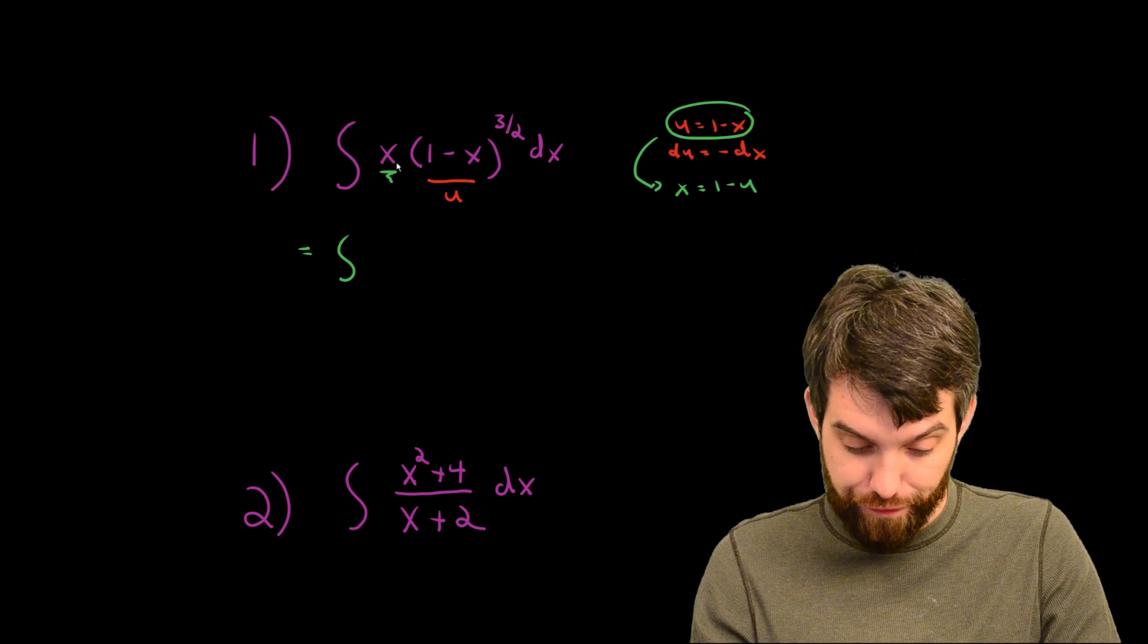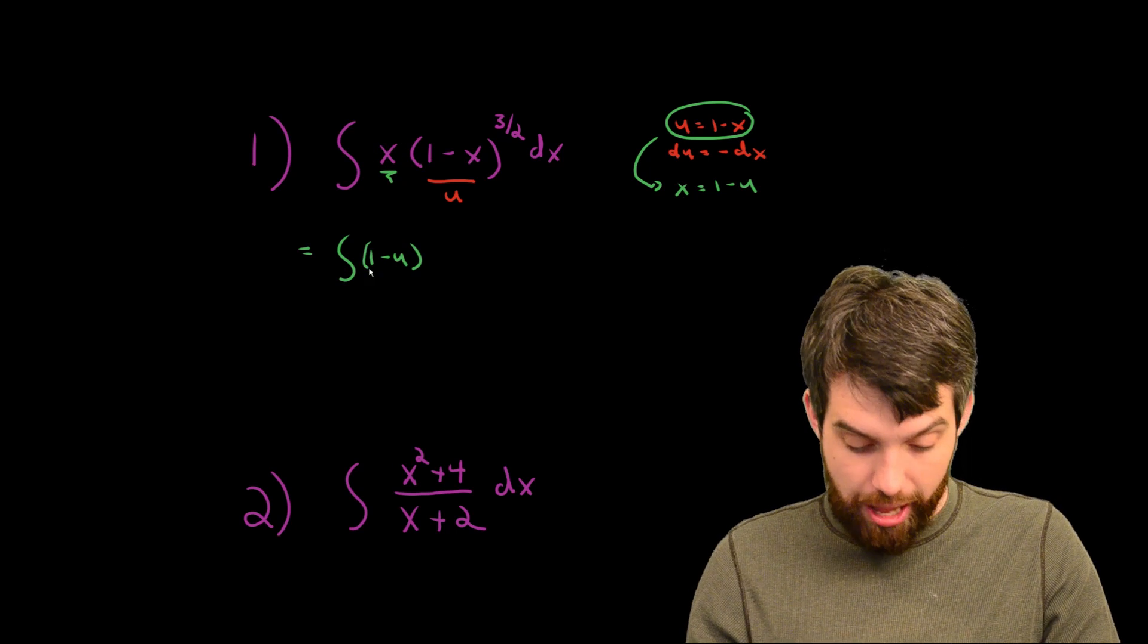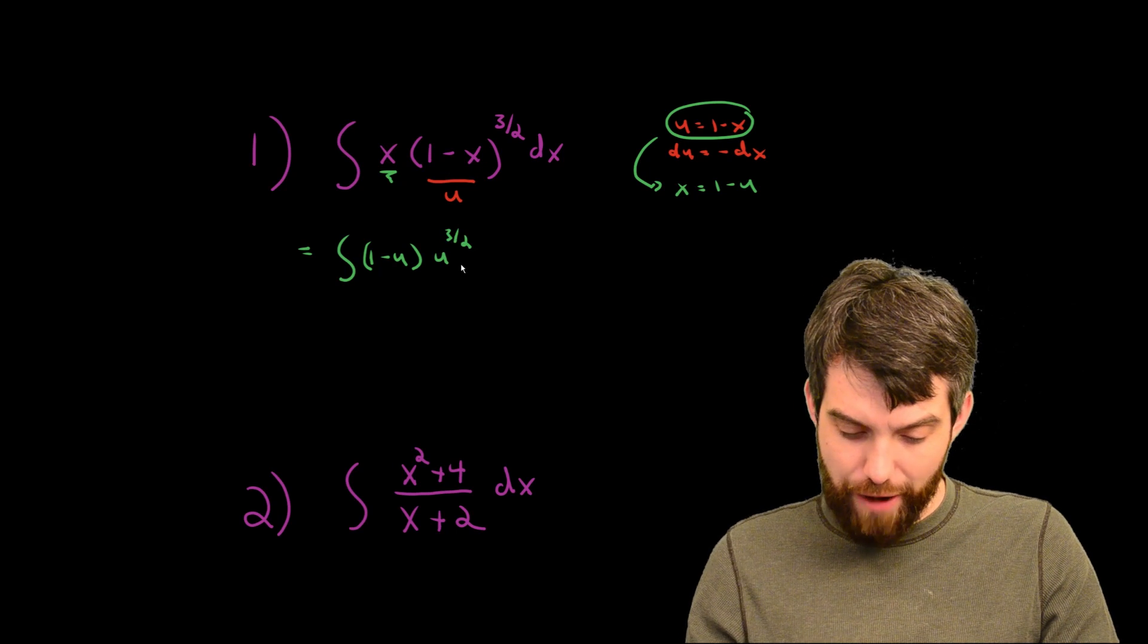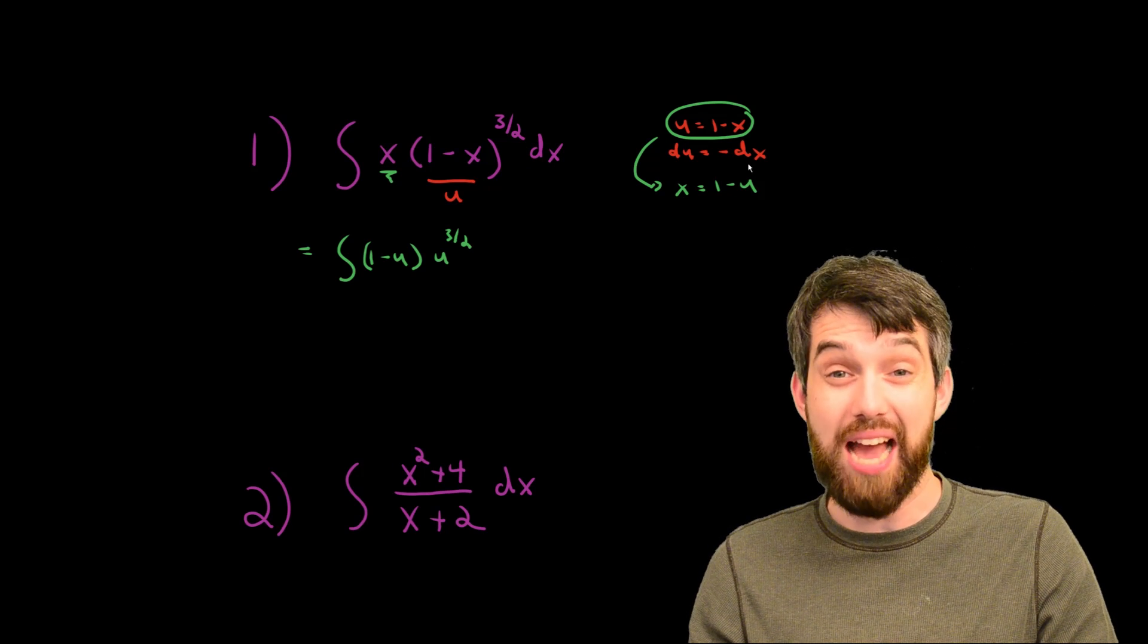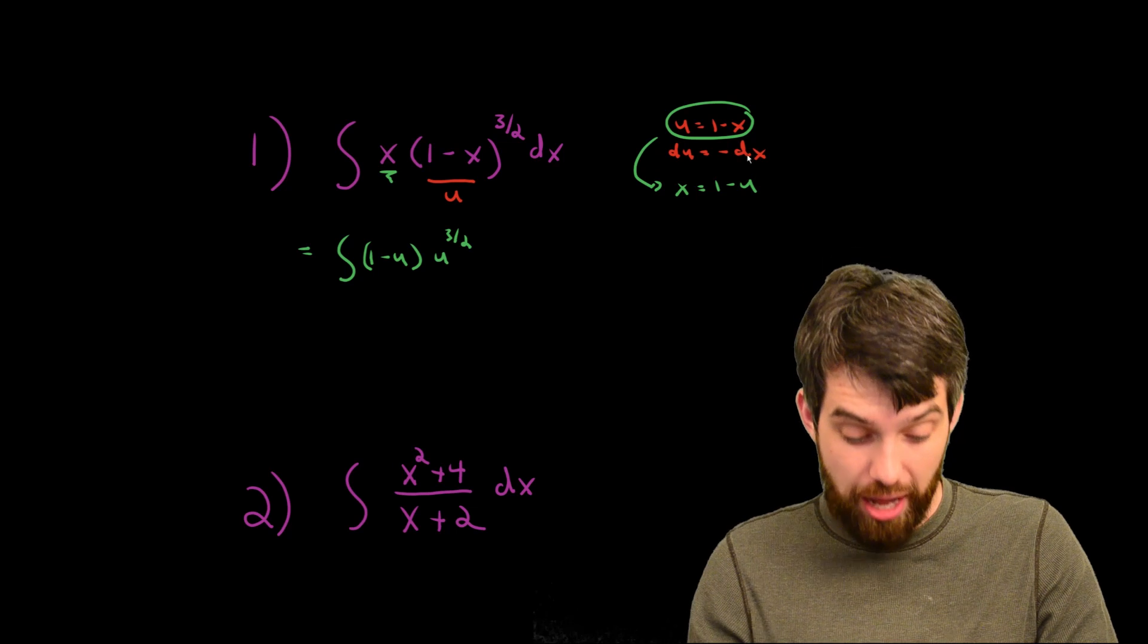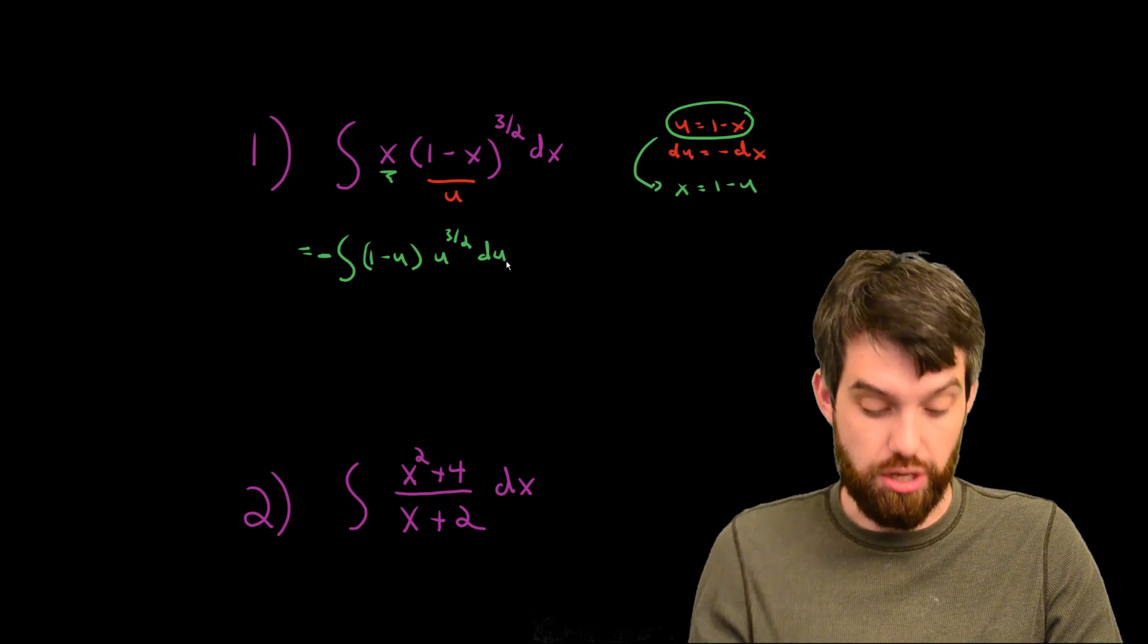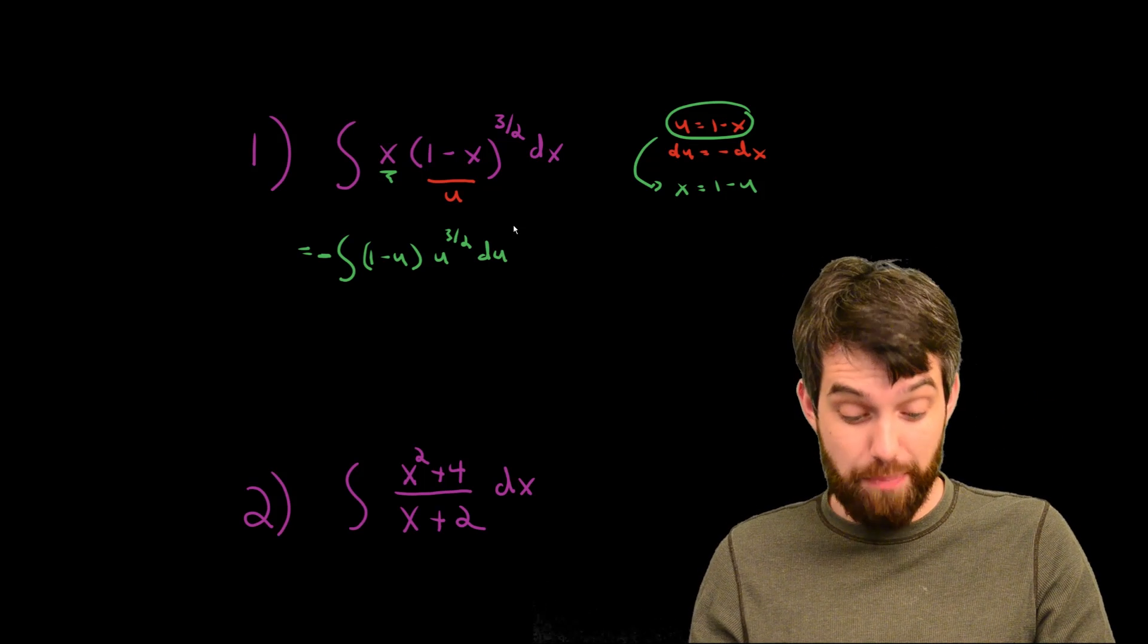I'm going to say this is the integral. The first x is going to turn into 1 minus u. And then I have a u to the power of 3 halves. And finally, I have a positive dx. I really need a minus dx if I want to have a du here. So I'm going to take the extra minus sign out the front, and I'm going to write du. That's looking pretty decent.